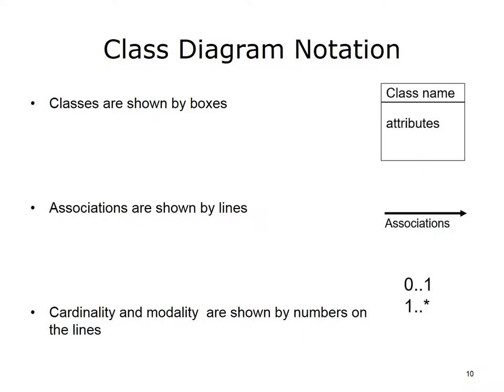A class, shown by a box, represents the information collected, generated by, or used in a process. An association, shown by a line, represents relationships between the information. Where an entity relationship diagram shows only the number of times data can be related, class diagrams employ more types of relationships, including aggregation, composition, and inheritance, that are designated by different arrowheads. Navigability, the direction of the relationship, is shown by an arrowhead. Cardinality and modality of the association are shown by numbers on the lines.